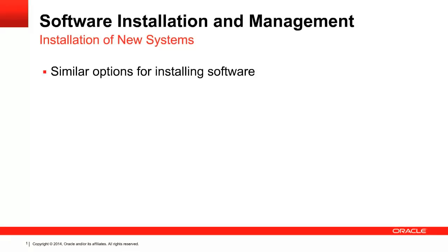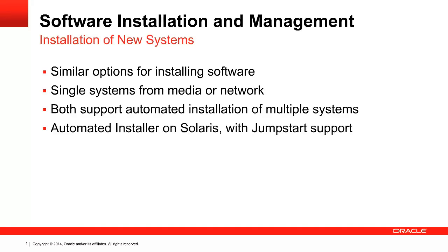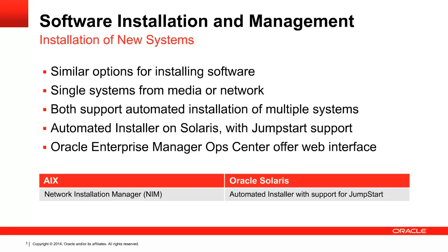The good news is that AIX and Oracle Solaris have similar concepts for software installation and management, but the tools you need to use are different. AIX and Solaris provide similar options for installing a new instance on a single system using distributed media or network installations. While both also support automated installation of multiple systems, the tools are different. AIX uses Network Installation Manager, or NIM, whereas Oracle Solaris 11 uses Automated Installer to provide similar functionality. Automated Installer automates and batches installations based on customized or standardized system profiles, enabling unsupervised installation of multiple systems in large-scale environments. Jumpstart support is also provided in Oracle Solaris 11. Oracle Enterprise Manager Ops Center, included in all Oracle Premier support agreements, can be used to manage multiple systems through a web interface. So in moving from AIX to Oracle, you will replace Network Installation Manager with Solaris Automated Installer.